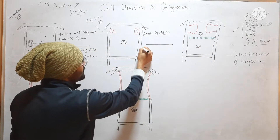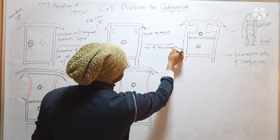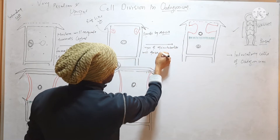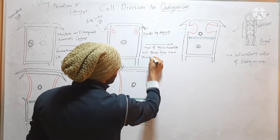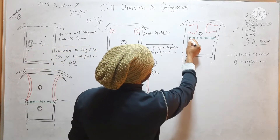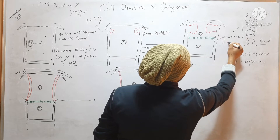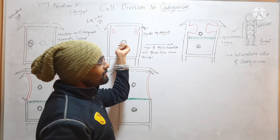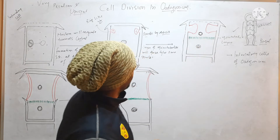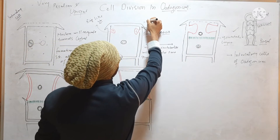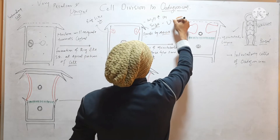After nuclear division, a layer of microtubules will arise between the two nuclei. So after division of the nuclei, a microtubule layer will develop in between these two nuclei. Further, the ring-like structures will increase in size and form a U-shaped structure.